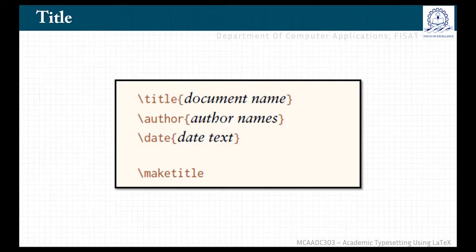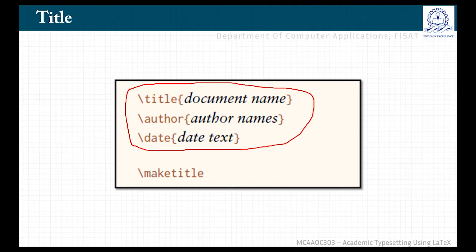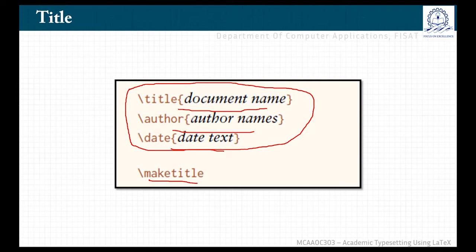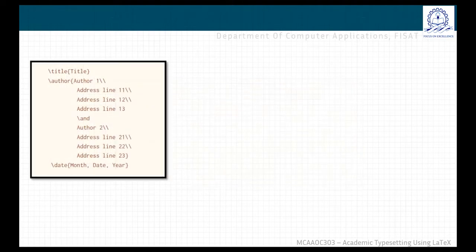Let's begin with title. The title part of a document usually consists of the name of the document, name of authors and sometimes a date. This is the basic code used to create a title. You can give the title of the document within these braces, then author, and if required, you can also give a date. After specifying title, author and date, you must issue a \maketitle command for this part to be typeset. By default, all entries produced by these commands are centered. If a title text is too long to fit in one line, it will be broken automatically.